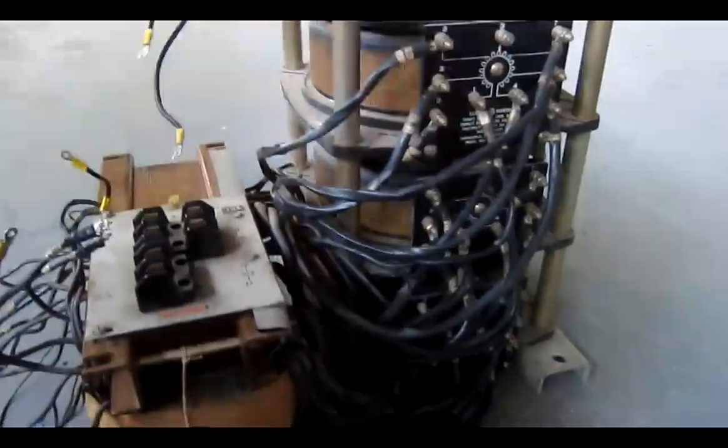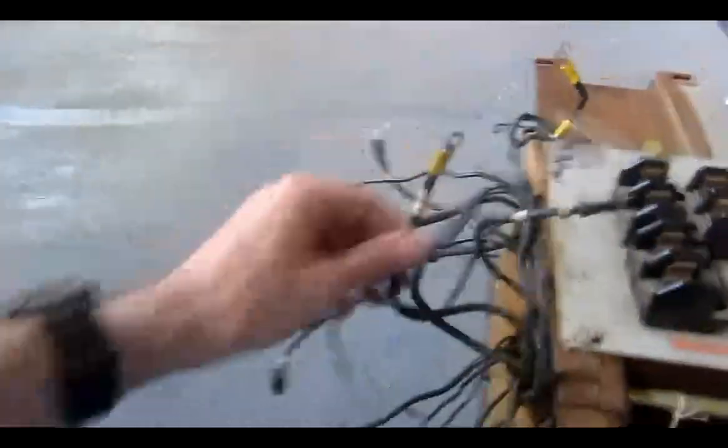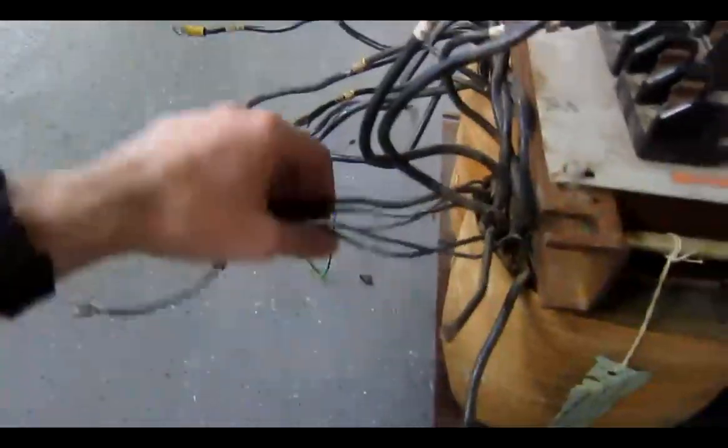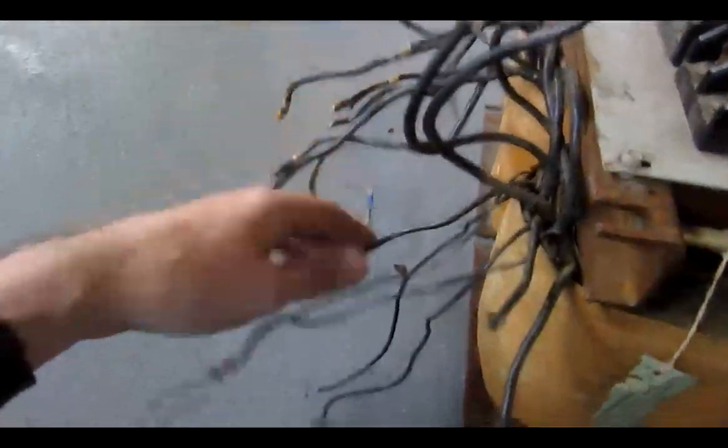So those wires we know where all those wires go. Now what we've got is all these extra wires here coming out the other side of this. A lot of them are really tiny, some of them are really fat. They're all different sizes and this is where it gets really weird.